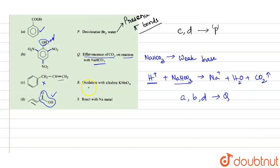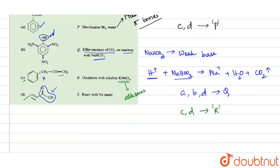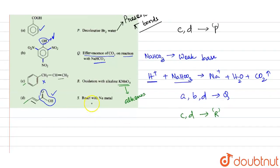The next reaction is oxidation with alkaline KMnO₄, which also indicates the presence of alkenes. Compounds C and D contain alkenes, so C and D are linked with option R.